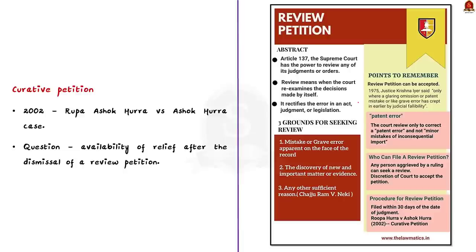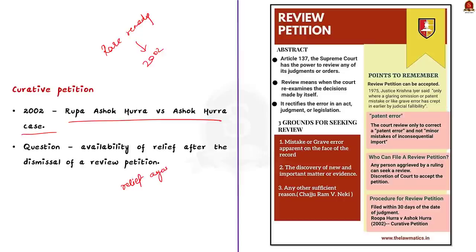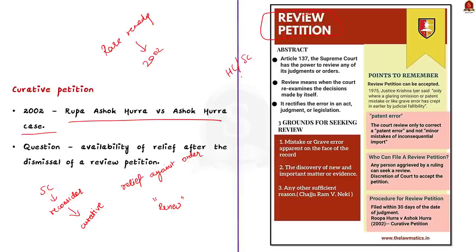Curative jurisdiction is a rare remedy evolved by a constitution bench of the Supreme Court in 2002 in the Ashok Hurra versus Rupa Hurra case. The question arose whether an aggrieved person is entitled to any relief against the final judgment or order of the Supreme Court even after a review petition is dismissed. It was then decided that, to prevent misuse of its process and prevent any miscarriage of justice, the Supreme Court would reconsider its judgment within the limited power it has. Thus the term curative petition was derived.